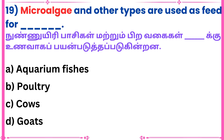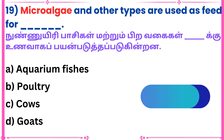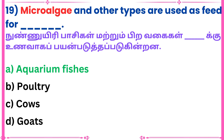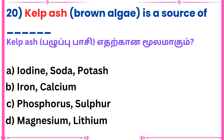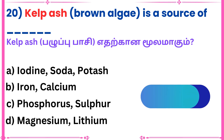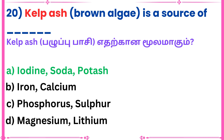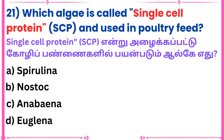19th question: Microalgae and other types are used as feed. 20th question: Kelp ash is a source of what? Answer: Aquarium fishes. Single cell protein used in poultry feed.